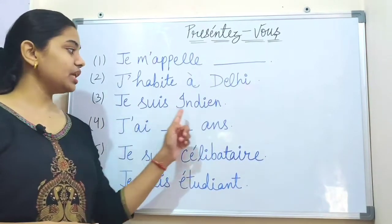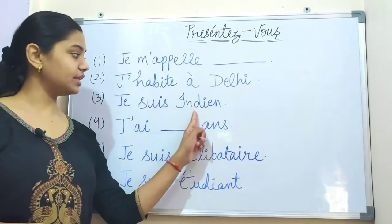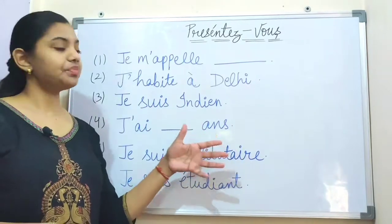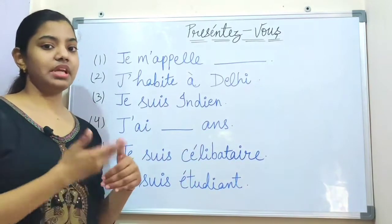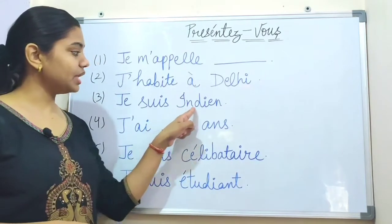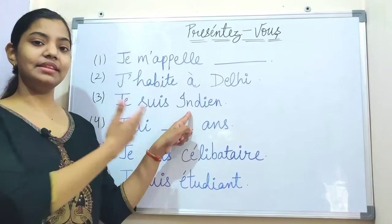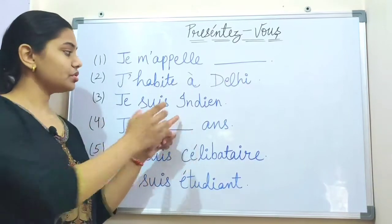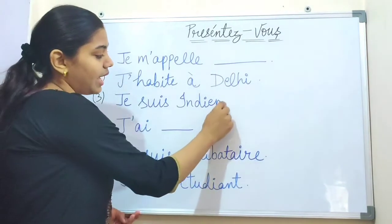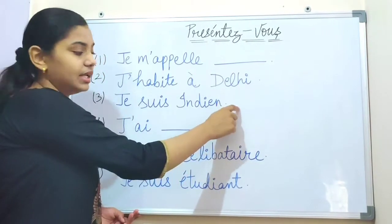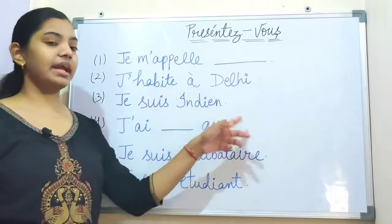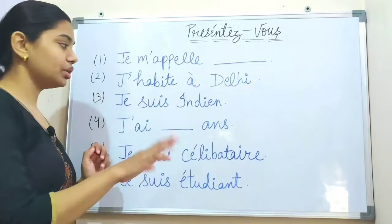Next, you say: Je suis indien — that means 'I am Indian'. If you are male, you say 'indien'. If you are female, you add N and E at the end, and it becomes 'indienne'. So je suis indien or je suis indienne, according to your gender.